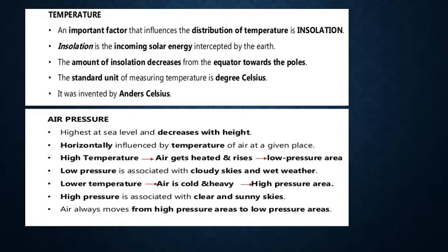Next, we are going to see about temperature and air pressure. An important factor that influences the distribution of temperature is insolation. Insolation is the incoming solar energy intercepted by the earth. The amount of insolation decreases from the equator towards the poles. The standard unit of measuring temperature is degrees Celsius, invented by Anders Celsius.